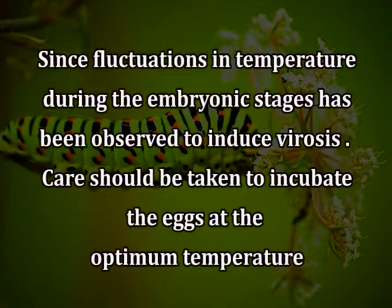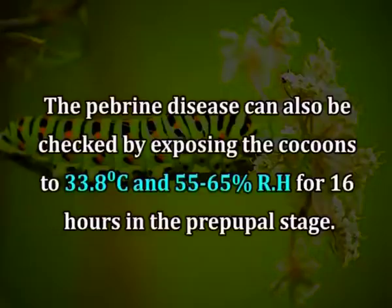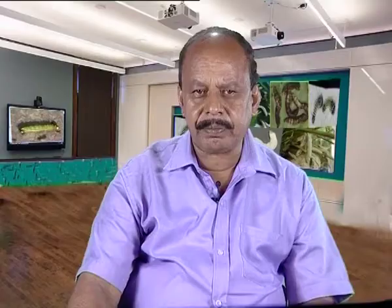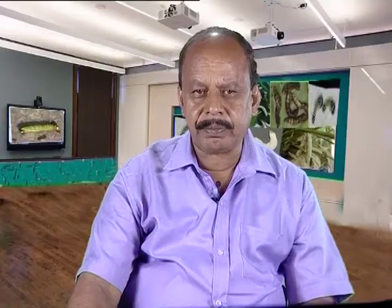Since fluctuations in temperature during the embryonic stages have been observed to induce virosis, care should be taken to incubate the eggs at the optimum temperature. Apart from microscopic examination, pebrine disease can also be checked by exposing the cocoons to 33.8 degrees centigrade and 55 to 65 percent relative humidity for 16 hours in the pre-pupal stage. Treatment of eggs with hot water at about 40 degrees centigrade for 30 minutes, 36 to 40 hours after oviposition, also helps to control these diseases.